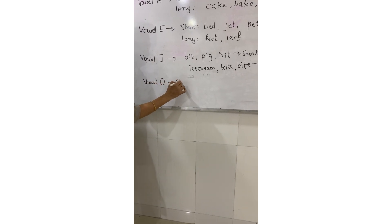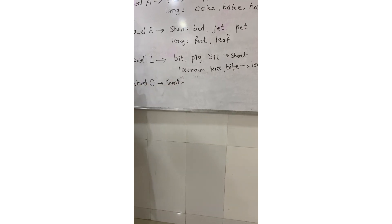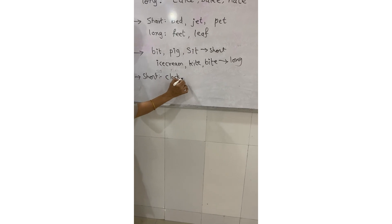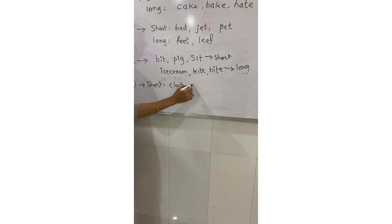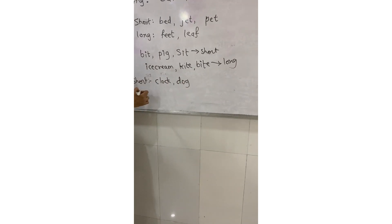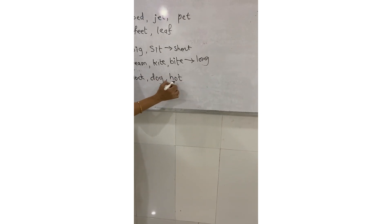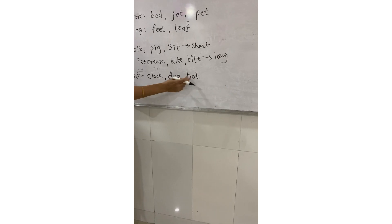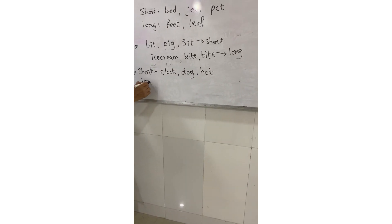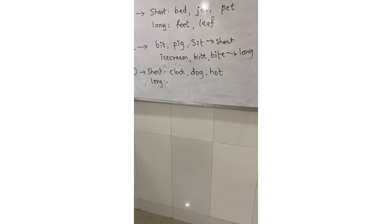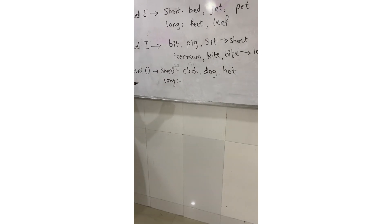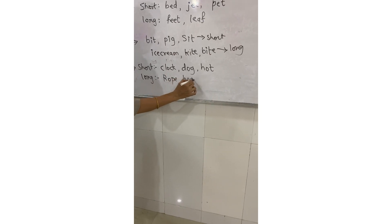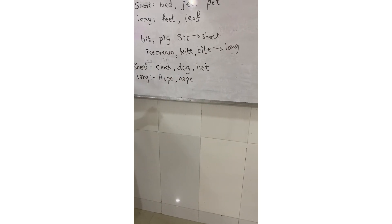Now the long and short sound of vowel O. Short sound examples: C-L-O-C-K 'clock', D-O-G 'dog', H-O-T 'hot' — these are the short sounds of vowel O. Long sound examples: 'row', 'ho', 'look' — these are long sound examples of vowel O.